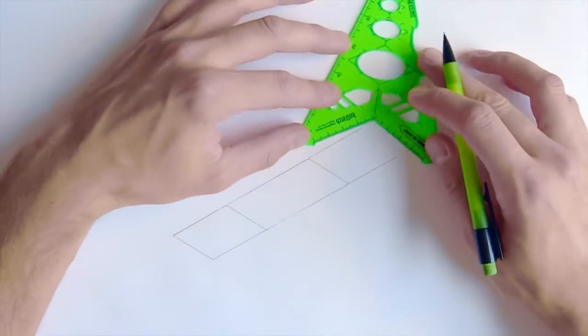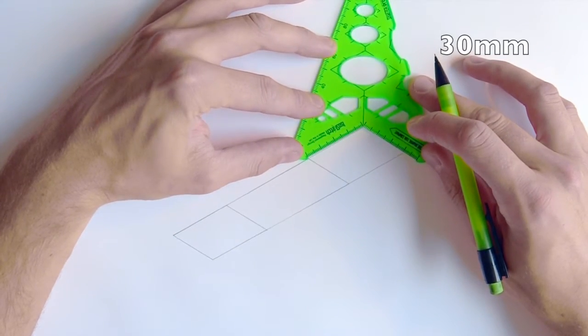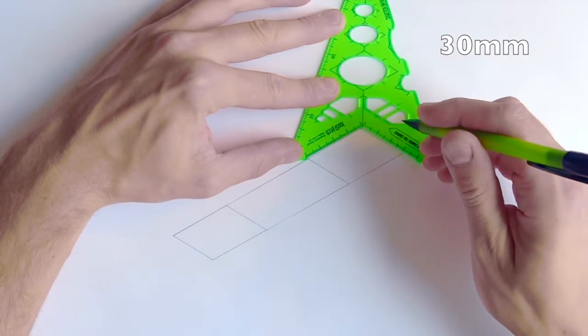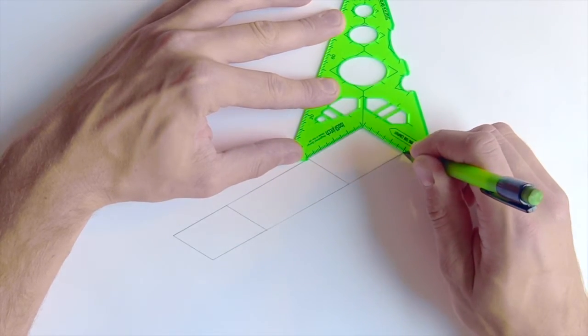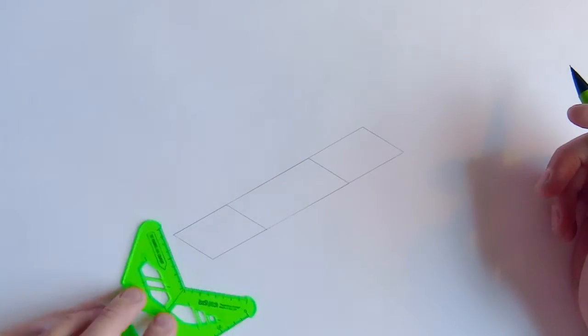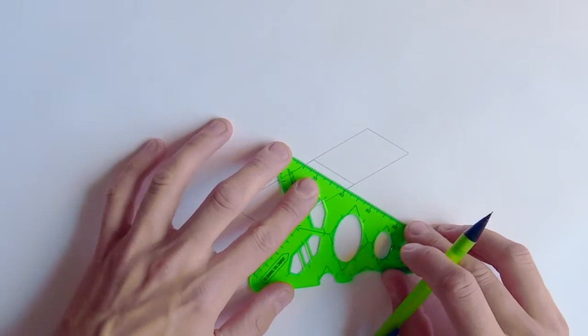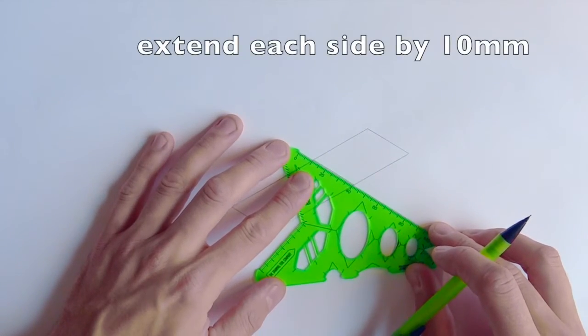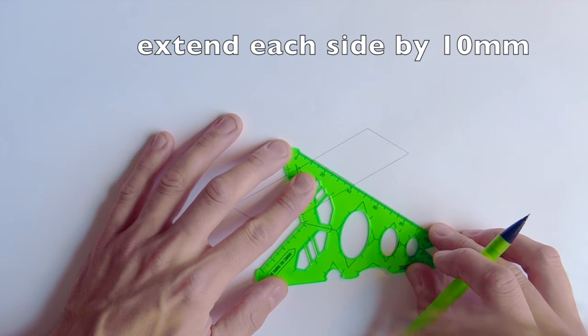We're just going to create the shape here using the ISO sketch and using the V shape just to keep things in a lovely parallel isometric view. What you should have is a shape that measures 30mm by 40 plus 60 plus 40mm.